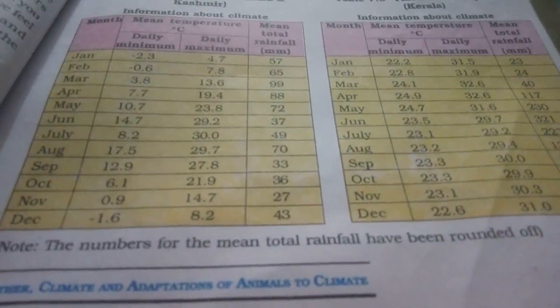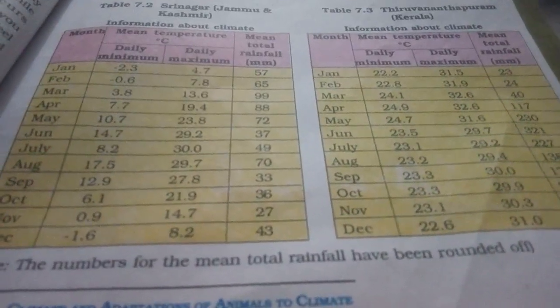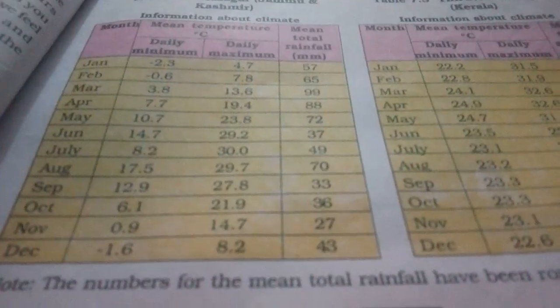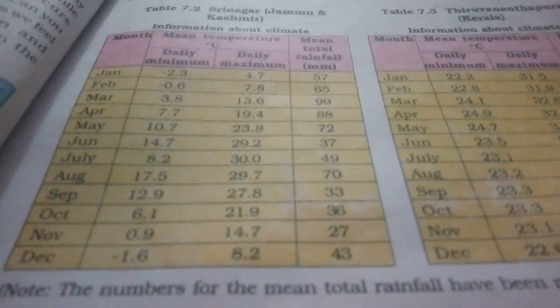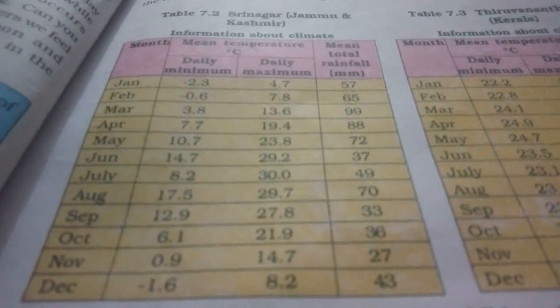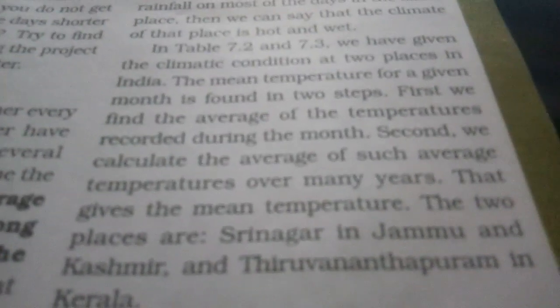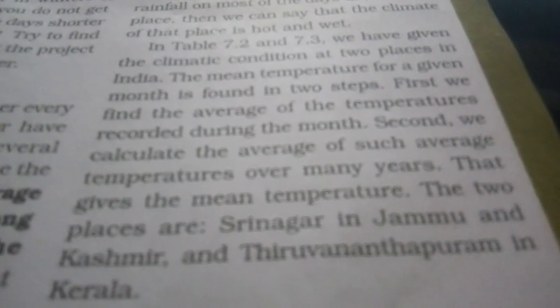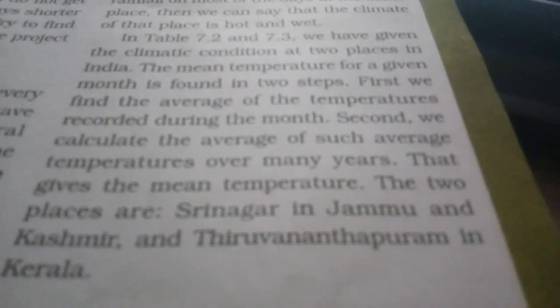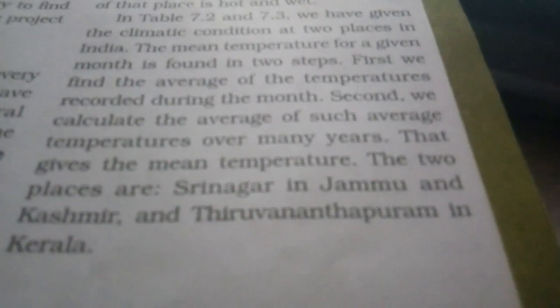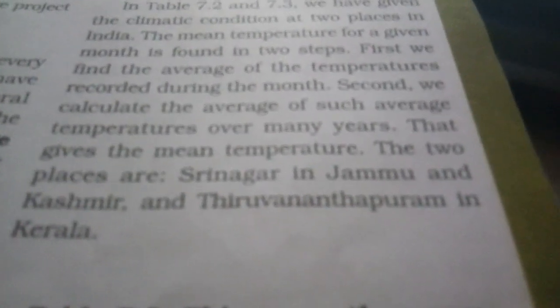In India, one place is Kashmir and the other is Kerala. To find the mean temperature, they have recorded the daily minimum, daily maximum, and the mean temperature in two steps. First, we find the average of the temperatures recorded during the month. Second, we calculate the average of such average temperatures over many years. That gives the mean temperature for Srinagar in Jammu and Kashmir and Thiruvananthapuram in Kerala.